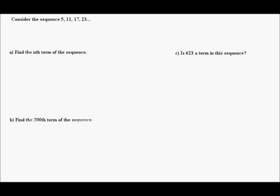So again, let's move on to the same sequence here. Consider the sequence 5, 11, 17, 23. A, find the nth term of the sequence, so you want to find the general rule there. B, calculate the 200th term of the sequence. And then the third question asks, is 623 a term in the sequence? Well, let's do the first one first.